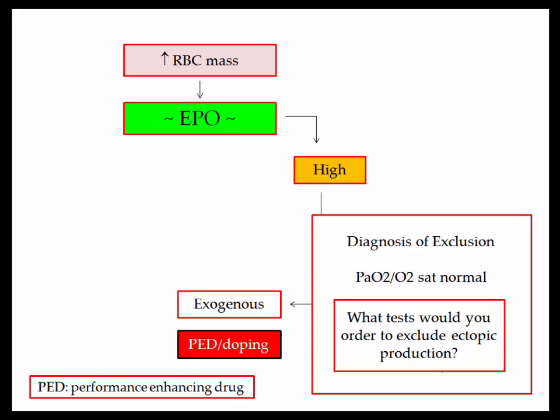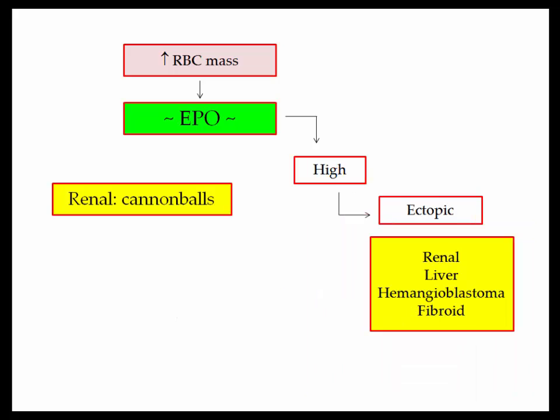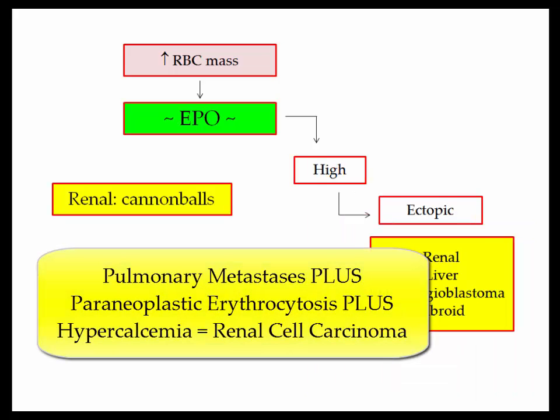Exogenous erythropoietin used by athletes is most commonly a diagnosis of exclusion. They will describe an endurance athlete and will need to give you data demonstrating normal oxygenation. Testing will need to exclude ectopic hormone production. To exclude neoplastic production of erythropoietin: alpha-fetoprotein is ordered to exclude hepatocellular carcinoma; a urinalysis and renal imaging would be pursued to exclude renal cell carcinoma; if female, a pelvic ultrasound would be obtained to exclude uterine fibroids; and finally, you would need to consider von Hippel-Lindau syndrome. In the context of erythrocytosis, be on the lookout for cannonball lesions in the lungs.